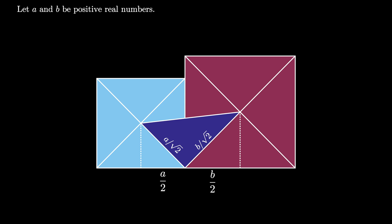But then we can use the Pythagorean theorem to find that the hypotenuse of this triangle is the square root of A squared over 2 plus B squared over 2.